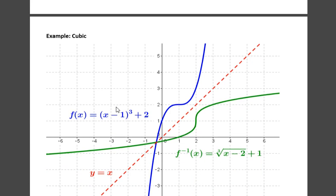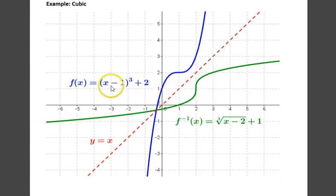Here's an example of a cubic, a transformation of a cubic, shifted right and up, and its inverse. And still we have the symmetry showing here.